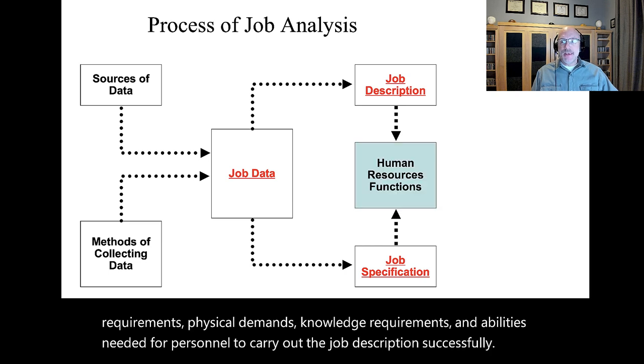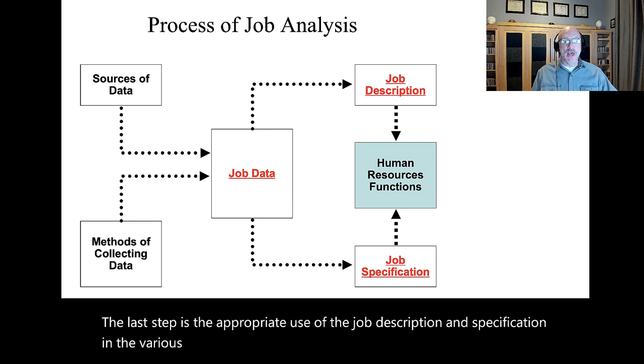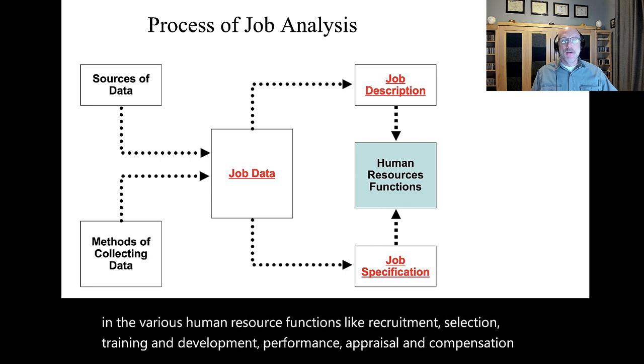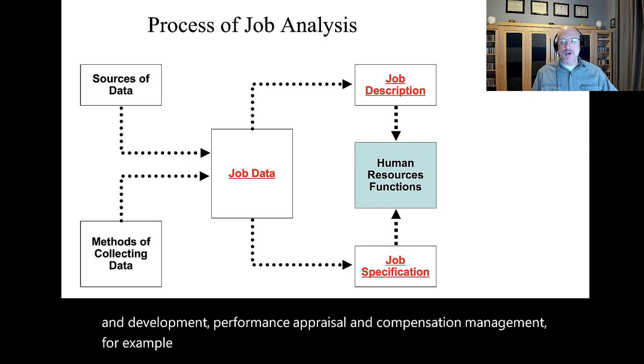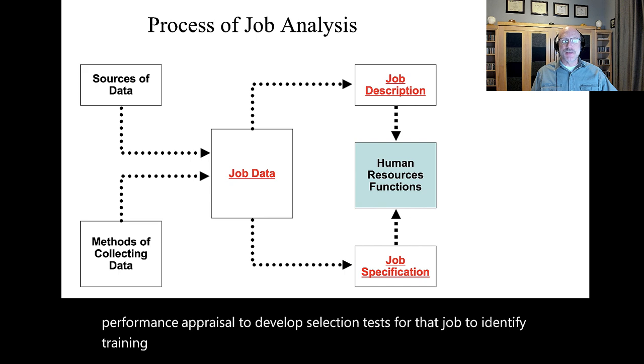The fifth step is the delineation of the job specification. The last step is the appropriate use of the job description and specification in various human resource functions like recruitment, selection, training and development, performance appraisal, and compensation management. For example, if there is no job description, it is very difficult to give a performance appraisal, to develop selection tests for that job, to identify training opportunities, etc.